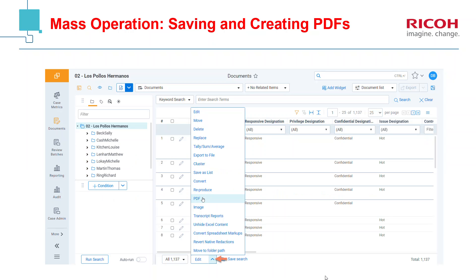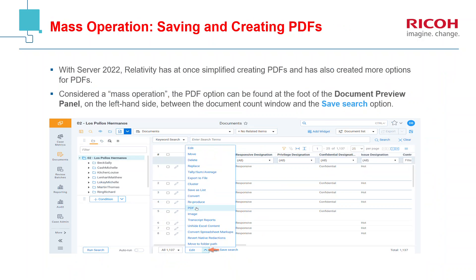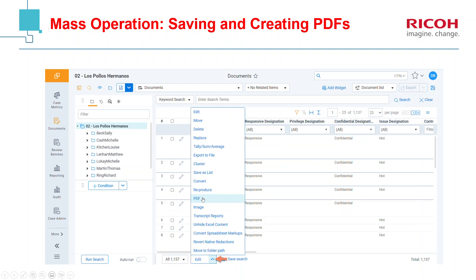The mass operation PDF is found between the document count and the saved search. With Server 2022, Relativity has at once simplified creating PDFs and has also created more options for PDFs. Considered a mass operation, the PDF option can be found at the foot of the document preview panel, on the left-hand side, between the document count window and the saved search option. I will show you a larger screen capture of that screen. This is the document count window, and this is the saved search option. You choose PDF.